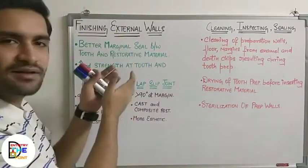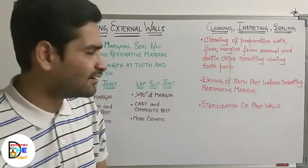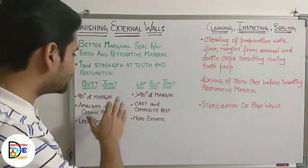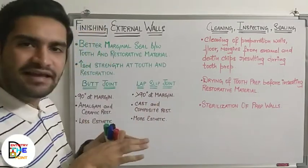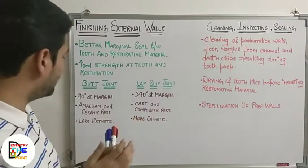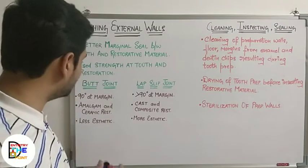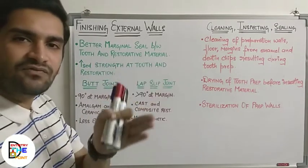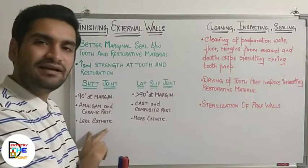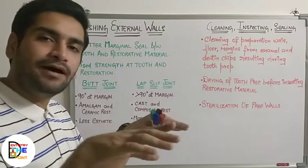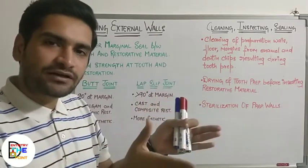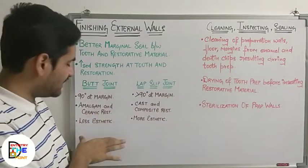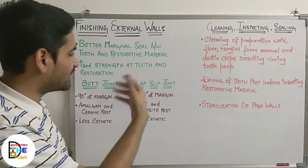You can finish external walls in two patterns. First is the butt joint, where you make a 90-degree angle with the external wall of the preparation. This is mainly done in amalgam and ceramic restorations. The external margin will be 90 degrees, which is a bit less aesthetic because you can see two different zones — amalgam and tooth, or ceramic and tooth.